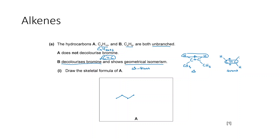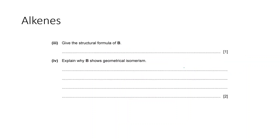For the trans isomer, you rotate one carbon in the double bond so the hydrogen goes to the other side — both hydrogens on opposite sides of the double bond, with CH₃ groups also on opposite sides. B shows geometrical isomerism because there is a carbon-carbon double bond and each carbon atom in the double bond is bonded to two different groups.